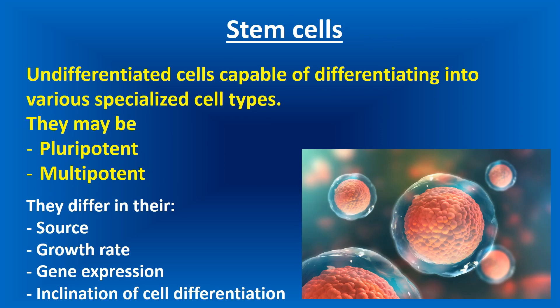Stem cells are undifferentiated cells capable of differentiating into various specialized cell types. They may be pluripotent or multipotent, and they differ in their source, growth rate, gene expression, and inclination of cell differentiation — meaning many cells differentiate into other cells, and some may differentiate into yet other types of cells.